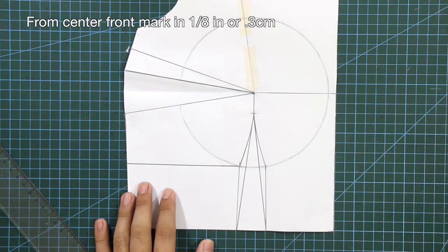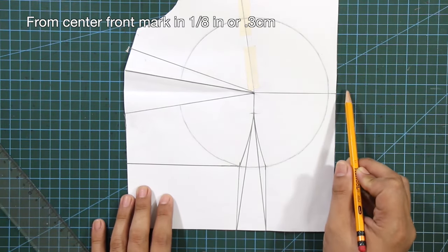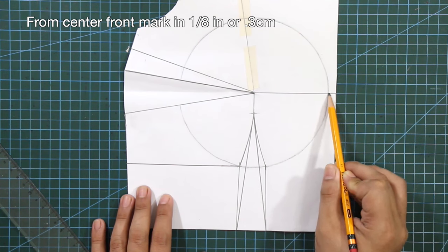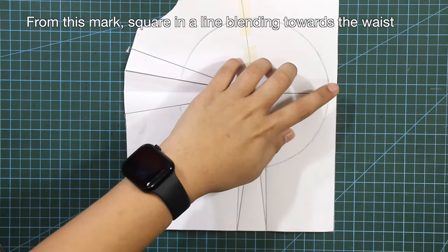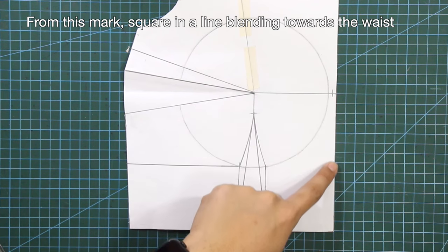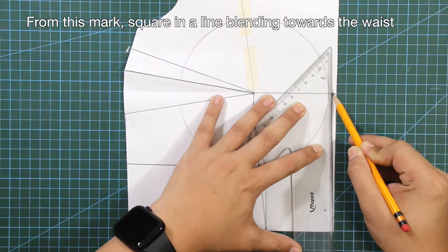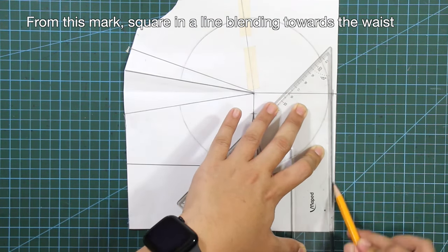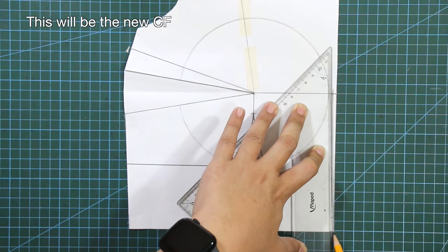From center front, mark in 1/8 of an inch or 0.3 centimeters. From this mark, square in a line blending towards the waist. This will be the new center front.